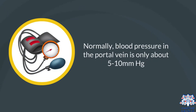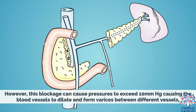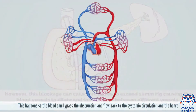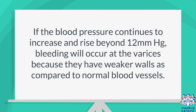Normally, blood pressure in the portal vein is only about 5–10 mmHg. However, this blockage can cause pressures to exceed 10 mmHg, causing the blood vessels to dilate and form varices between different vessels. This happens so the blood can bypass the obstruction and flow back to the systemic circulation and the heart. If the blood pressure continues to increase and rise beyond 12 mmHg, bleeding will occur at the varices because they have weaker walls as compared to normal blood vessels.